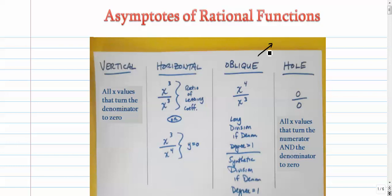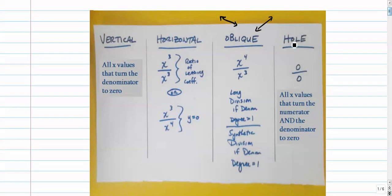Oblique, or slanted asymptotes, occur when the numerator degree is exactly 1 higher than the bottom — so like 4 and 3, or 2 and 1, or 1 and 0. To figure out the equation of those lines, all you need to do is some division. If the denominator is a linear term, a binomial or just linear by itself, all you need to do is synthetic division. If the denominator is a higher degree term, then you have to do long division.